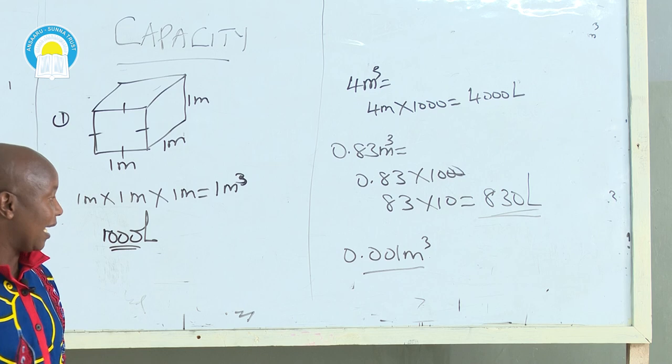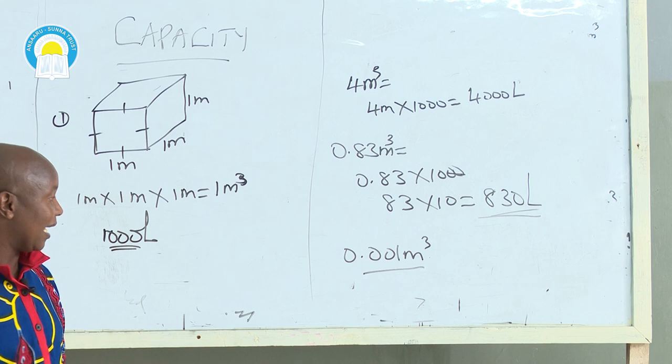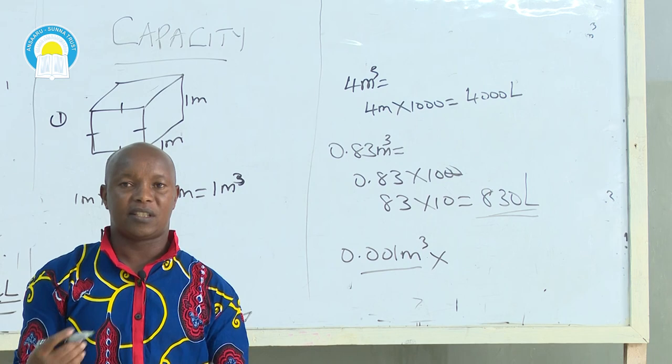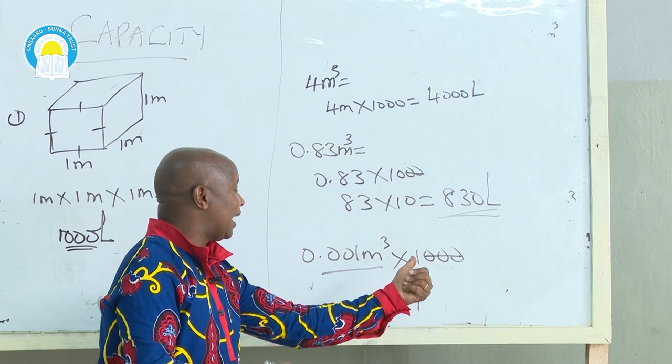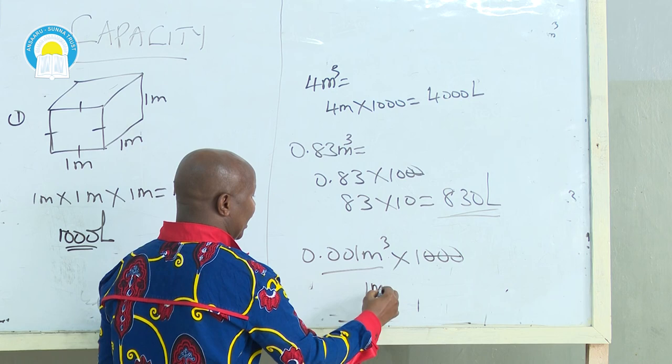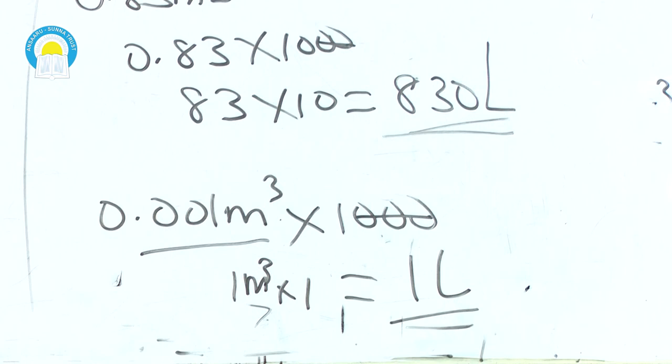The last example: you are given 0.001 cubic meters, then asked to convert into liters. To convert cubic meters to liters, simply multiply by 1,000. We have three zeros and three decimal places — the three zeros swallow the three decimal places. You remain with 1 × 1, which equals 1 liter.